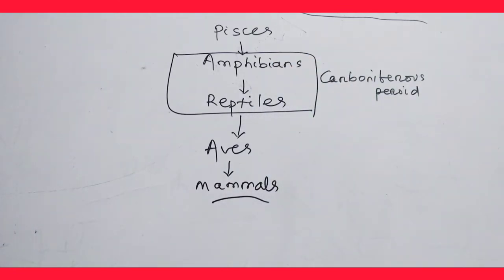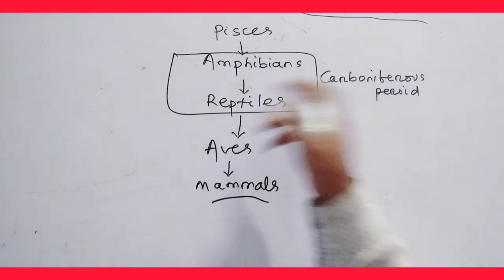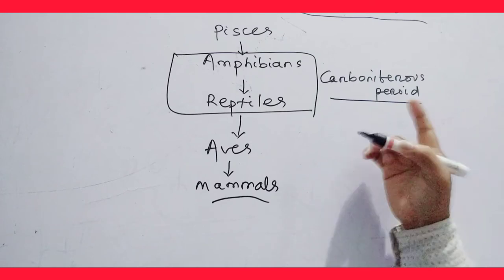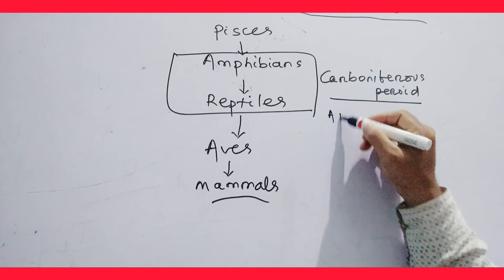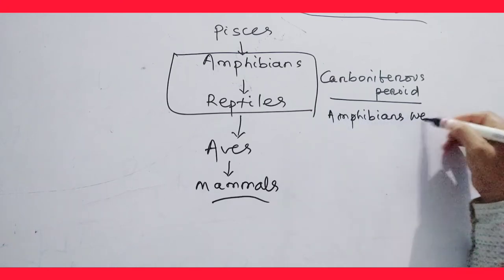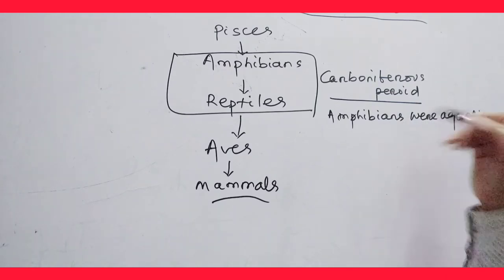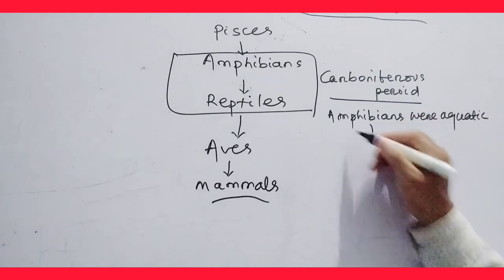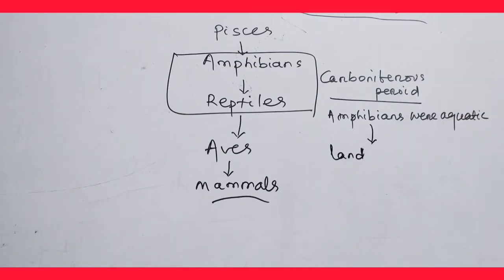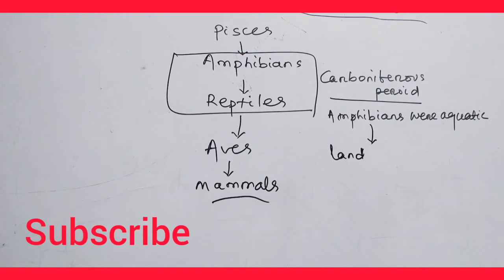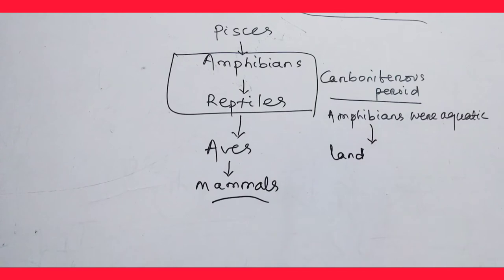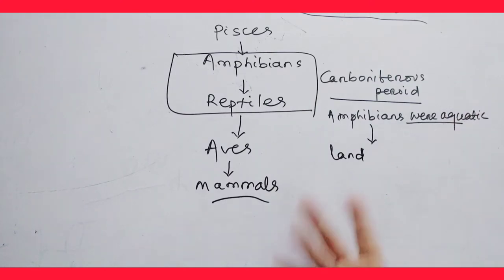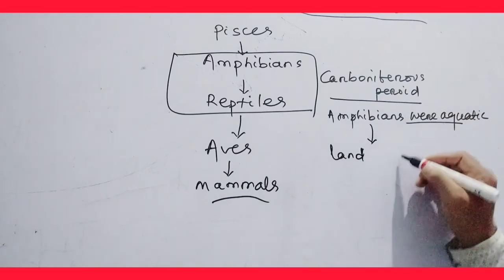It has been estimated that these reptiles evolved from amphibians during the Carboniferous period. It was the time of evolution of amphibians into reptiles. During the Carboniferous period, the amphibians were in water bodies — they were aquatic. From these water bodies they directly migrated to terrestrial environments; they entered into land, though they could not exploit the whole arid climate.